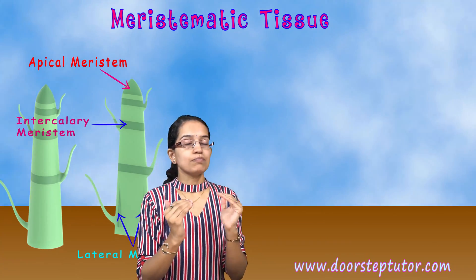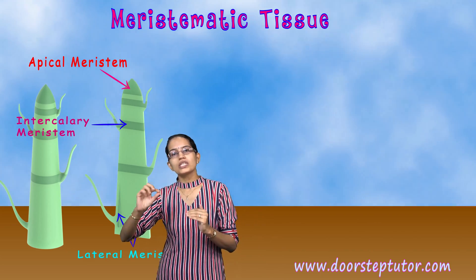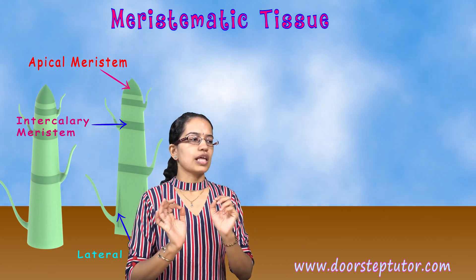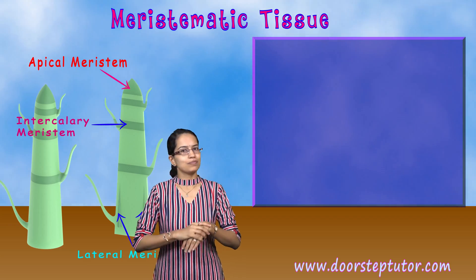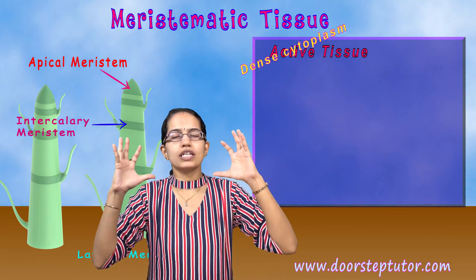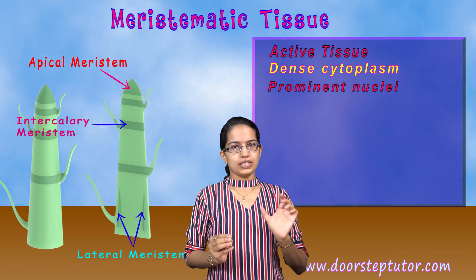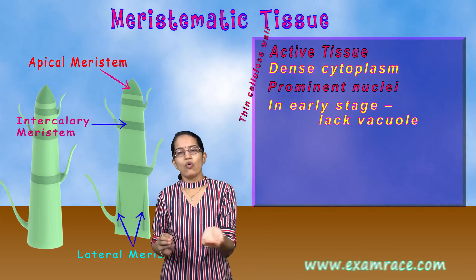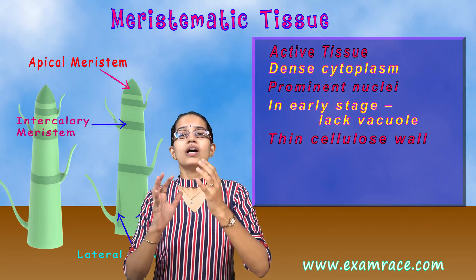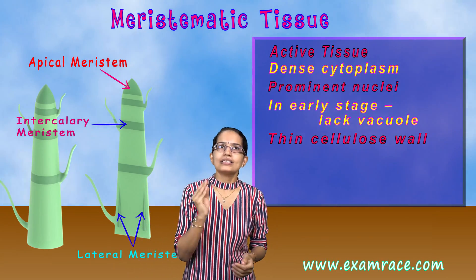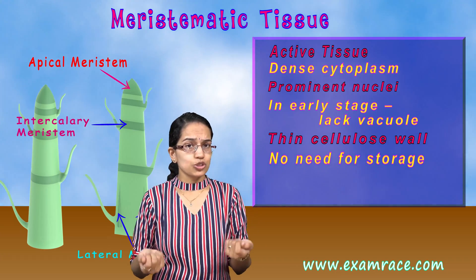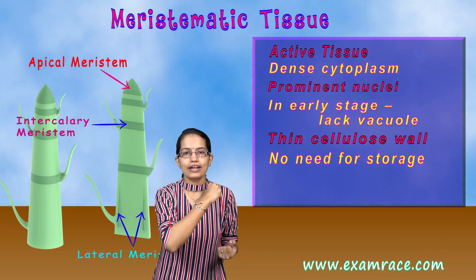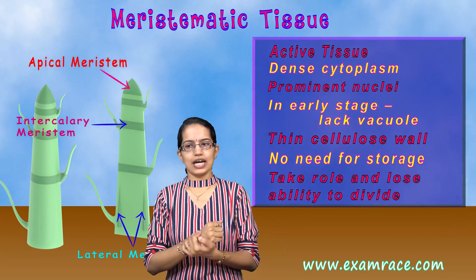Intercalary is important because it is the growth that takes place at the nodal areas — wherever you have nodes present, you would have growth. Talking about these meristematic tissues, they are active tissues with a dense cytoplasm and a prominent nucleus. There is no vacuole in the early stages, and the cell wall is a very thin cell wall made of cellulose. These meristematic tissues do not require anything to store because they are in their growing phase, and because of the dense cytoplasm and no vacuole, we can say there is no storage present.